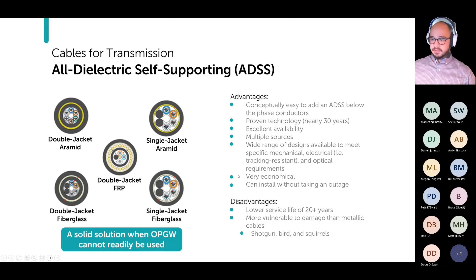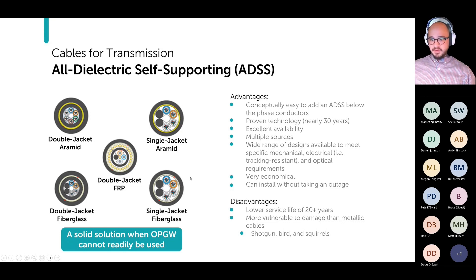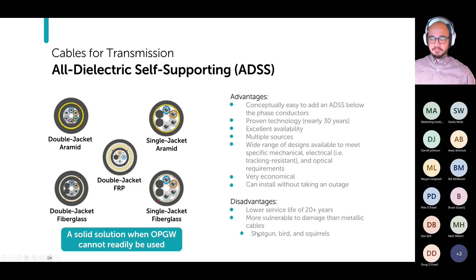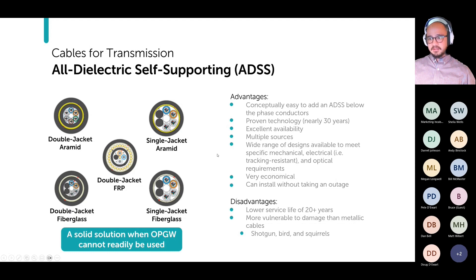ADSS is more economical than OPGW — it's cheaper — and you can install it without taking an outage. It does come with tradeoffs: it's not as robust as metal cables, with a lower service life of around 20 years, and it's more vulnerable to damage. In some areas with lots of birds or squirrels you can get critter damage, and there's also shotgun or rifle damage to consider. It's a very solid solution when you have an application that can't use OPGW.